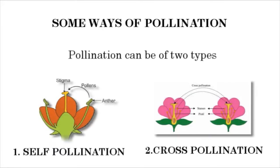Some ways of pollination. Pollination can be of two types: number one, self-pollination; number two, cross-pollination.